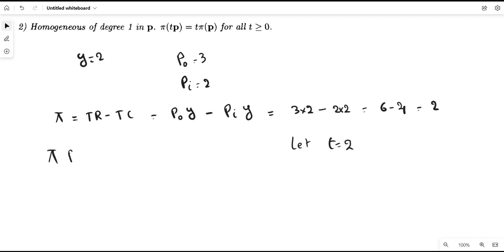Profit, which is a function of prices, this time we are scaling up by t, which equals 2. It means that if we scale the price of output by 2, it will become 6, and output remains 2.